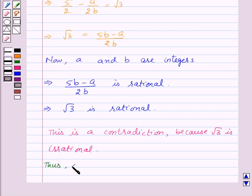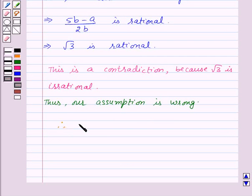Thus our assumption that 5 minus 2 root 3 is rational is wrong. So here we have proved that 5 minus 2 root 3 is irrational.